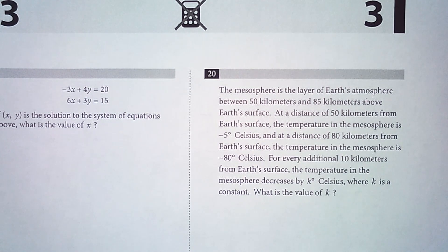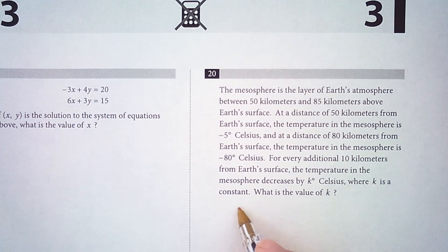So what we're going to do here is find the slope, and the slope is going to tell us how many degrees Celsius we're decreasing by for every one kilometer. So we can make up a couple of points here.